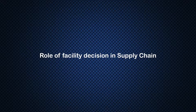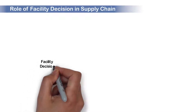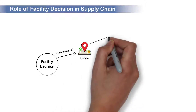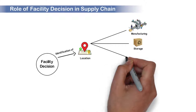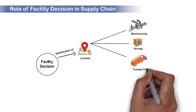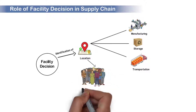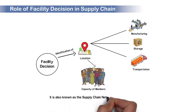Let us first understand the role of facility decision in supply chain. Supply chain facility decision deals with the process of identifying the location of manufacturing, storage, and transport-related facilities of the supply chain, and the allocation of the capacity of various members with their roles in the supply chain. It is also known as the supply chain network design decision.